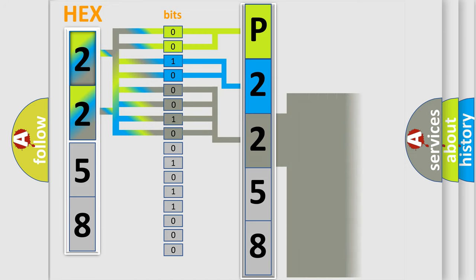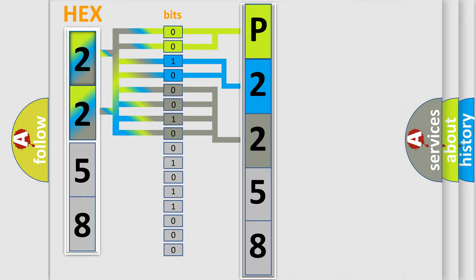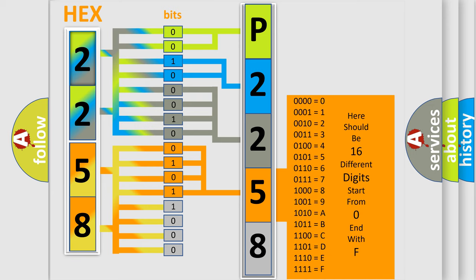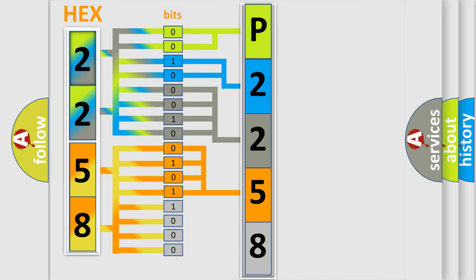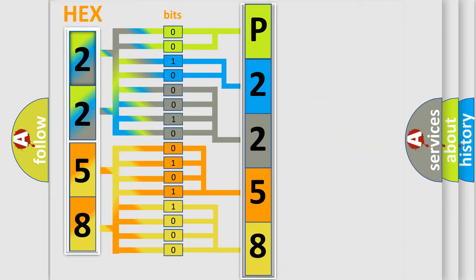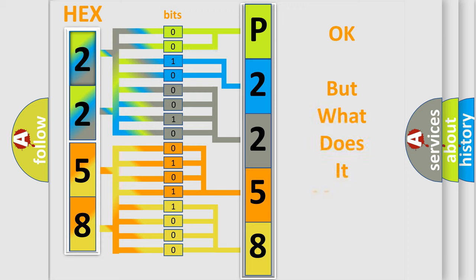The second byte is composed of a combination of eight bits. The first four bits determine the fourth character of the code, and the combination of the last four bits defines the fifth character. A single byte conceals 256 possible combinations. We now know in what way the diagnostic tool translates the received information into a more comprehensible format.